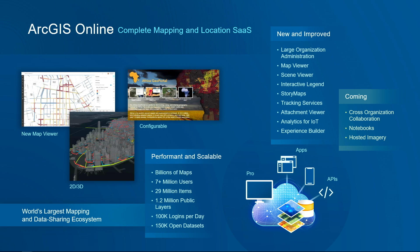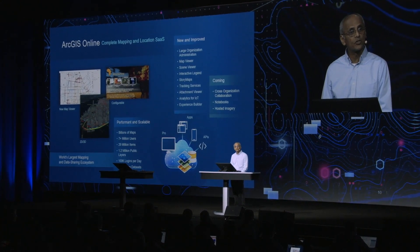ArcGIS Online is the world's largest mapping and data sharing ecosystem, with more than 7 million users and 29 million items. We've been working in a number of areas, including making it easier for administrators to manage large organizations, improvements to search, the new Experience Builder, Analytics for IoT, and more. This year, ArcGIS Online will expand to imagery, data science, and more analytics. We'll also be focusing on collaboration between different organizations using ArcGIS Online to do their work.